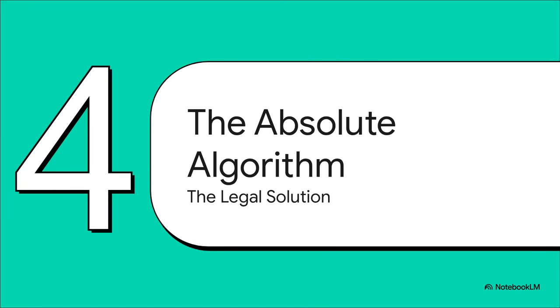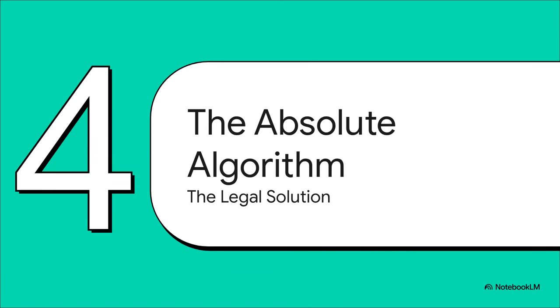So, how in the world do you solve the math problem and the legal problem at the exact same time? Well, that brings us to the solution, the absolute algorithm. The engine behind this is what's called a combinatorial algorithm. And the most important word on this slide, the one that changes everything, is exclusively. Instead of looking over the fence at what your competitors are doing, this algorithm looks inward. It deeply analyzes the unique DNA of your own portfolio to find the absolute best path forward, just for you.